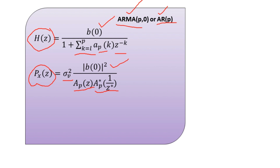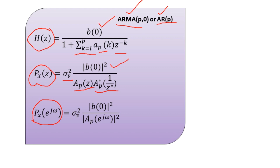This is the Z-domain representation; the frequency-domain alternative uses the Fourier analysis tool. In the Fourier domain, the power spectral density P_X(e^jΩ) is computed as σ²_xV times the ratio of |B(0)|² divided by |A_xP(e^jΩ)|². This is the power spectrum of the AR(P) random process, which has P poles and no zeros.